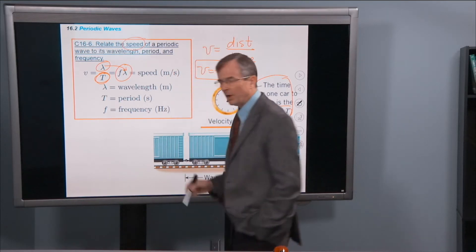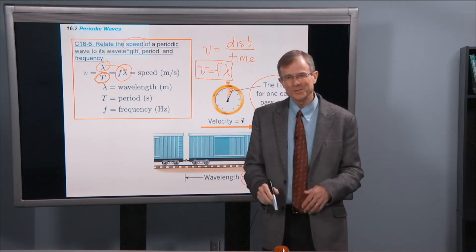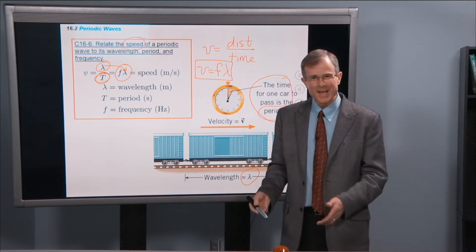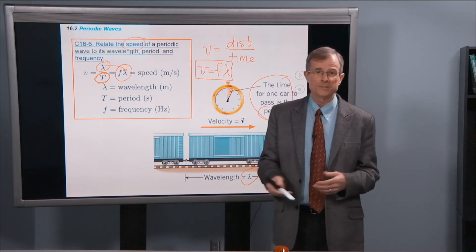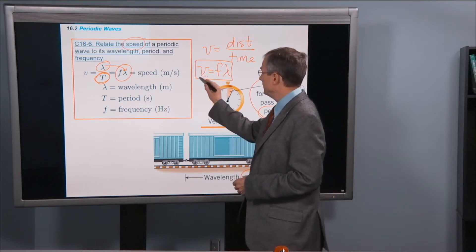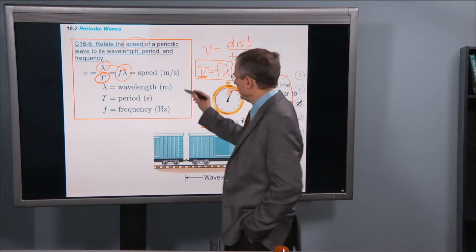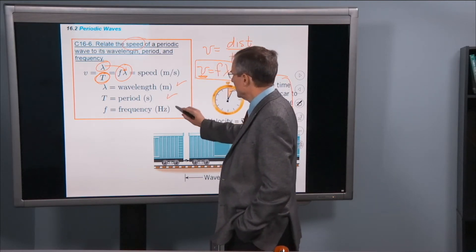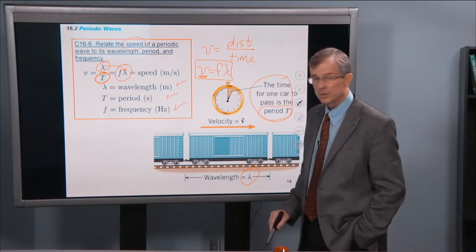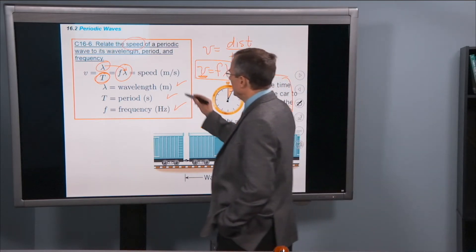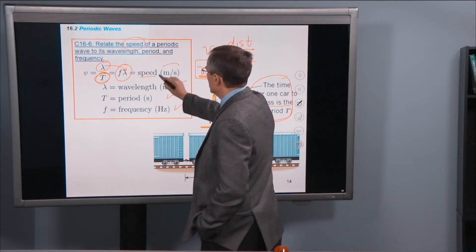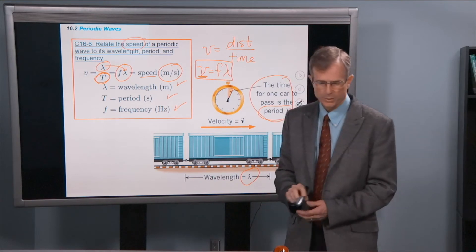We'll use this relationship all semester. We'll use it for mechanical waves and sound. We'll also use it for light waves where we'll replace this speed of the wave with the speed of light. So the wavelength, again, measured in meters, a period measured in seconds, frequency measured in hertz. And therefore, since the speed is a distance over a time, its units are meters per second.